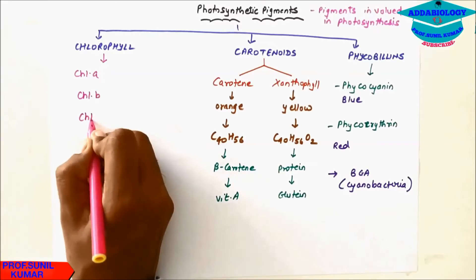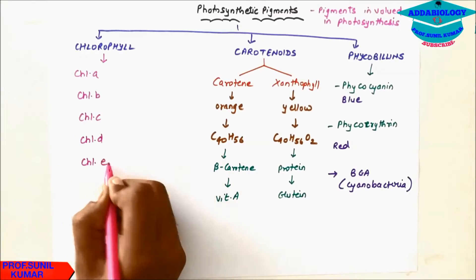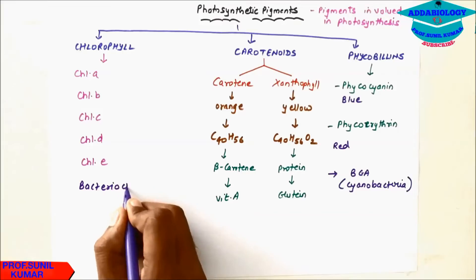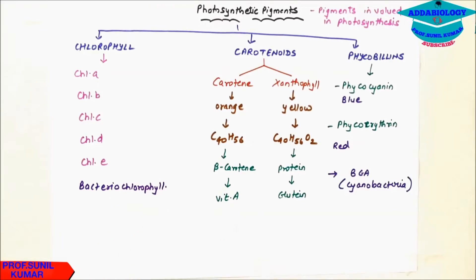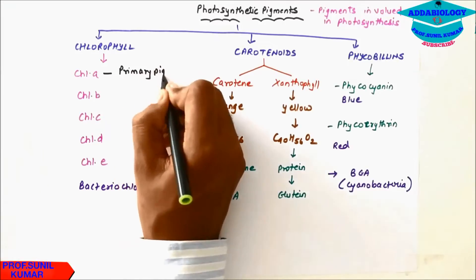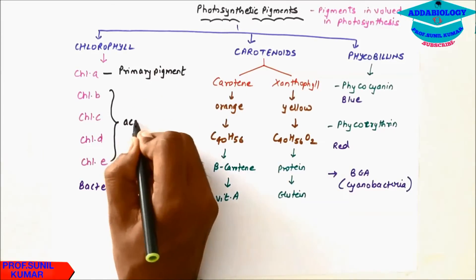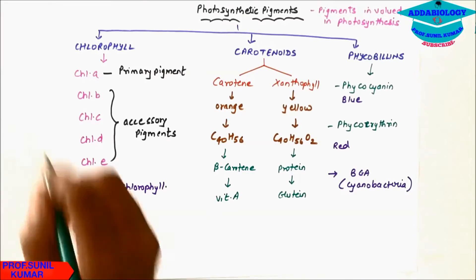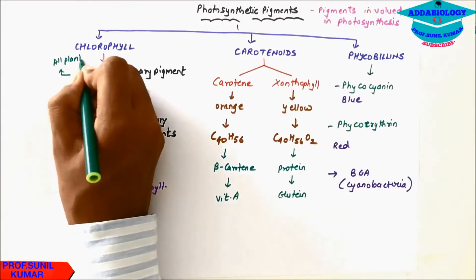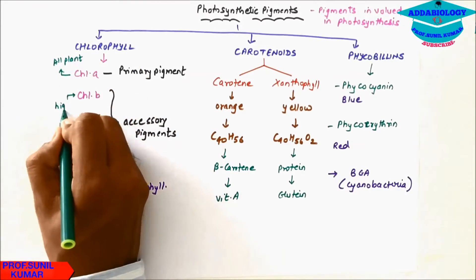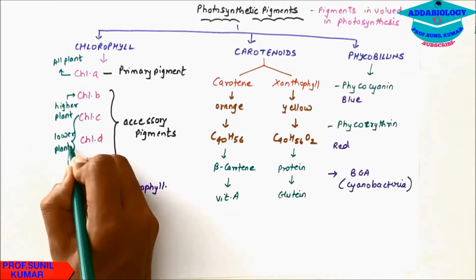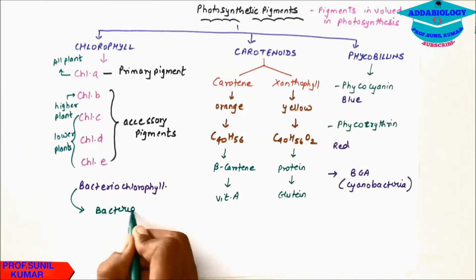When we talk about chlorophyll, there are different types: chlorophyll a, chlorophyll b, chlorophyll c, chlorophyll d, chlorophyll e, and bacteriochlorophyll. Chlorophyll a is considered the primary pigment because it can convert light energy into chemical energy, whereas the rest are accessory pigments — they transfer their energy by resonance to chlorophyll a. Chlorophyll a is found in all plants; chlorophyll b in higher plants; chlorophyll c, d, and e in lower plants like algae; and bacteriochlorophyll in bacteria.